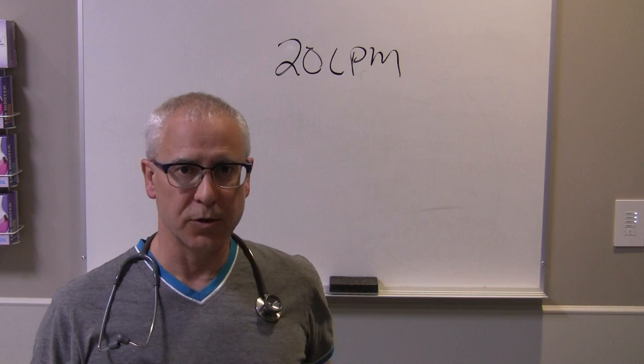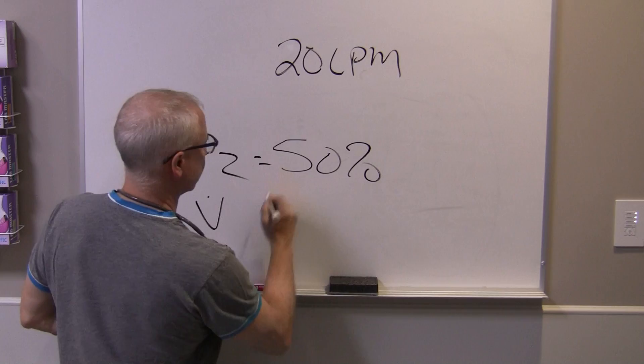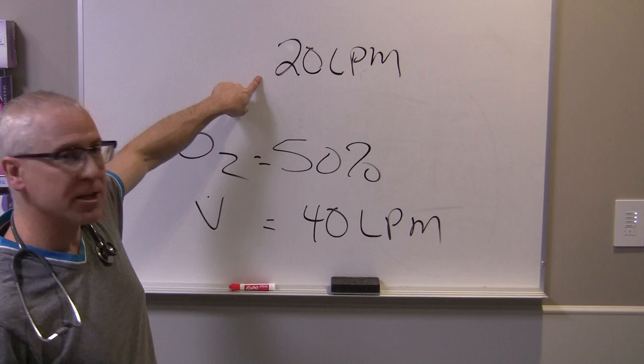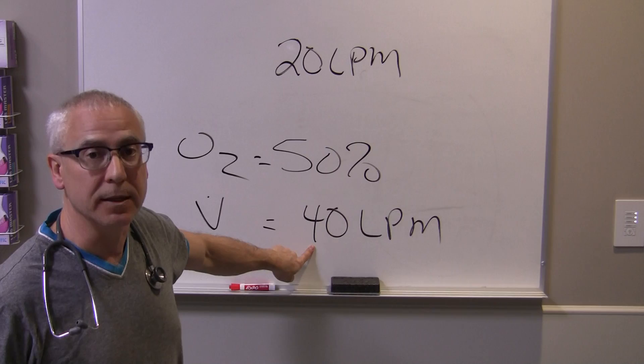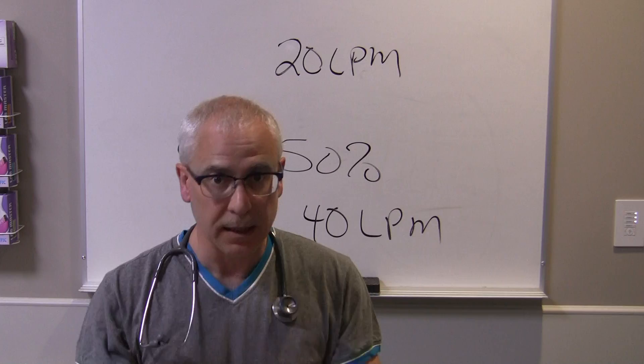So if you've got the oxygen concentration set, for example, to 50% and the flow rate on the device is 40 liters a minute, every time this patient takes a breath in, they're never exceeding the flow capability of the equipment. So this flow rate will always be able to provide whatever FiO2 you want the patient to get. Plus the beauty of high flow systems — they can also provide heat as well as moisture to your patient so they don't get that drying effect.